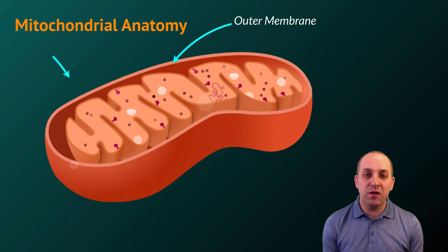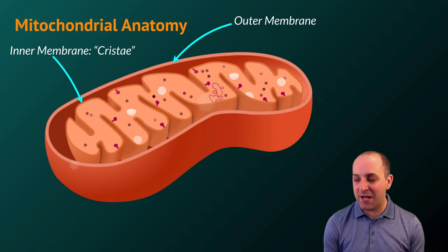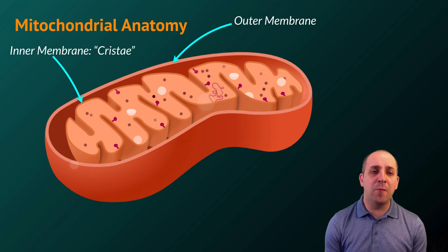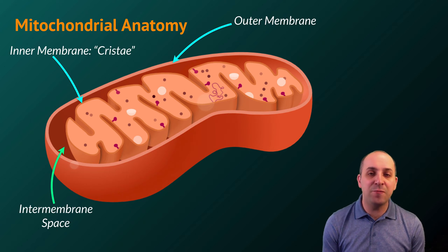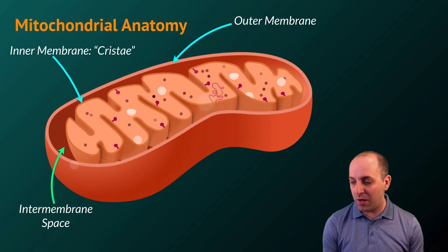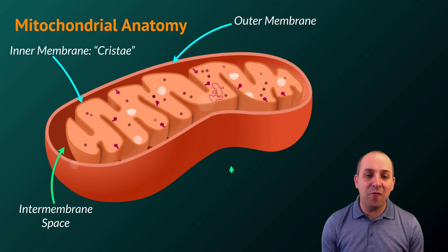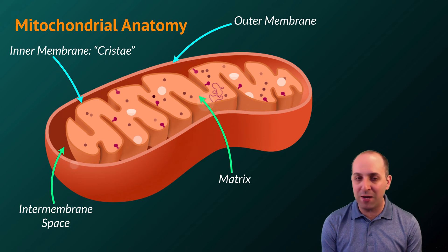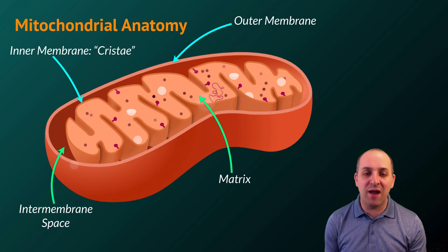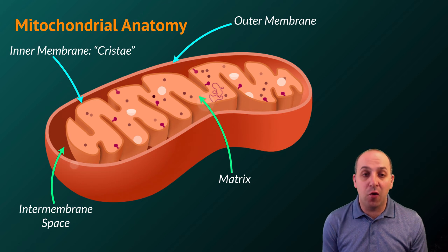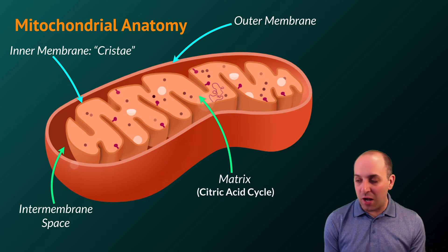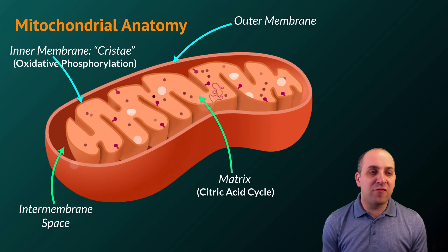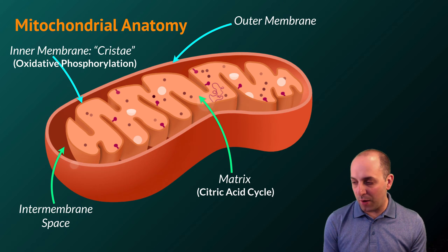Mitochondria have two different membranes: an outer membrane and an inner membrane. The folds of the inner membrane are technically termed the cristae. There's a space between the inner and outer membrane called the intermembrane space, and there's a space inside the inner membrane referred to as the mitochondrial matrix. The citric acid cycle occurs in the mitochondrial matrix, and oxidative phosphorylation occurs on the inner mitochondrial membrane.